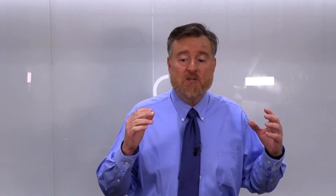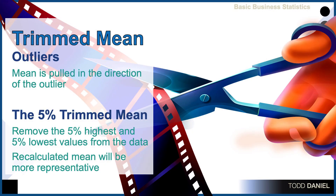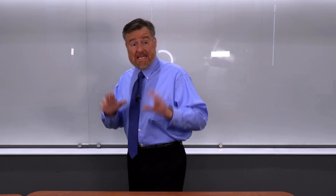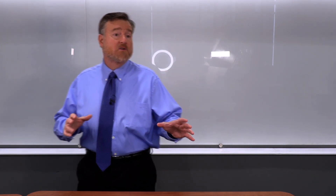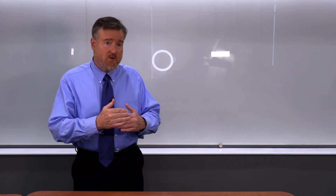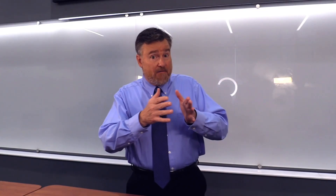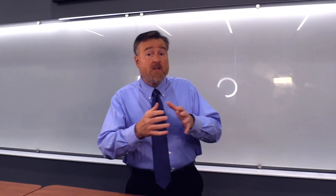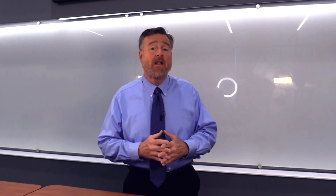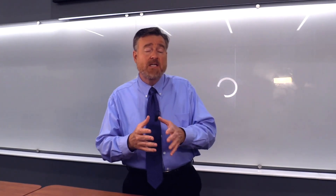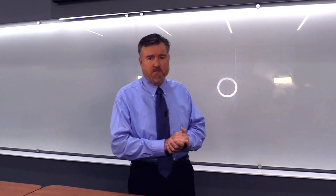The first mean that we're going to discuss is the trimmed mean. You would choose a trimmed mean when you have outliers in your data set. The mean is susceptible to outliers — if you have outliers in your data set, they create additional leverage that could affect the mean, moving it toward the outlier, making it less representative of the rest of the scores in your distribution.